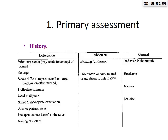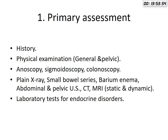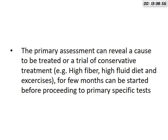Primary assessment includes the history of defecation, abdominal examination, and general manifestation. It may also include endoscopy, sigmoidoscopy, colonoscopy, plain x-ray, small bowel series, barium enema, abdominal and pelvic ultrasound, CT or MRI, and laboratory testing to exclude the endocrine causes of constipation.